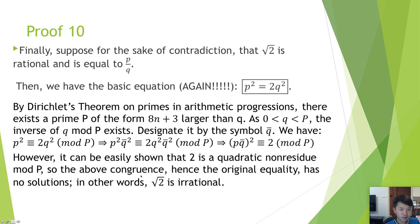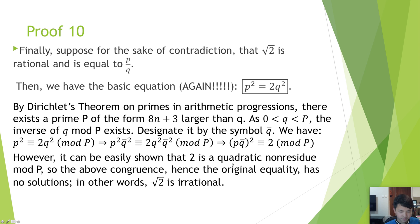Proof 10. Finally, suppose for the sake of contradiction that the square root of 2 is rational and is equal to p over q. Then we have the basic equation. By Dirichlet's theorem on primes in arithmetic progressions, there exists a prime p of the form 8n plus 3 larger than q. As q is between 0 and p, the inverse of q modulo p exists, designated by q-bar. The original equation hence becomes (p times q-bar) squared is congruent to 2 modulo p. However, it can be easily shown that 2 is a quadratic non-residue modulo p. So the above congruence, and hence the original equality, has no solutions — in other words, the square root of 2 is irrational.